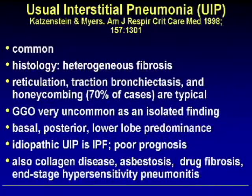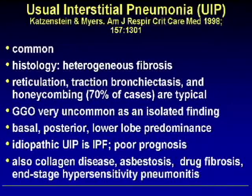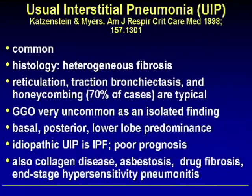Usual interstitial pneumonia, or UIP, is very common — that's why it's called usual. Histology shows heterogeneous fibrosis; the key word is heterogeneous. On CT, what we typically see is reticulation, traction bronchiectasis, and honeycombing in 70% of cases. Ground glass opacity is very uncommon as an isolated finding. The distribution is typically basal, posterior, and lower lobe predominant. Idiopathic UIP is the disease IPF, which has a very poor prognosis. That same histologic pattern may also be seen with collagen diseases, asbestosis, drug fibrosis, and end-stage hypersensitivity pneumonitis.